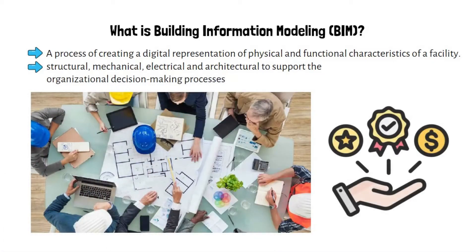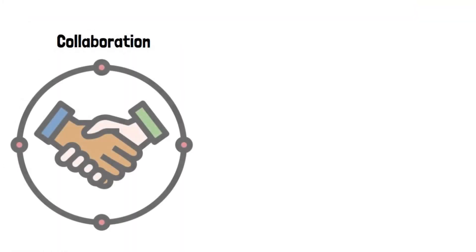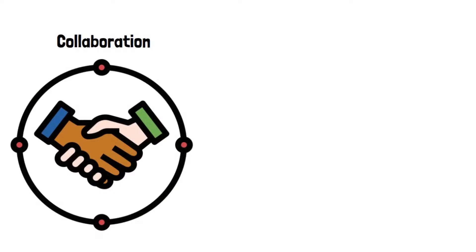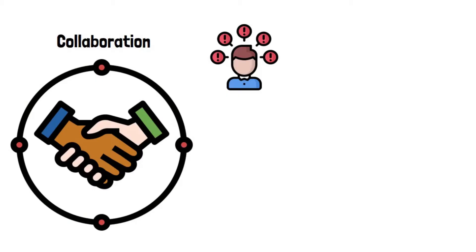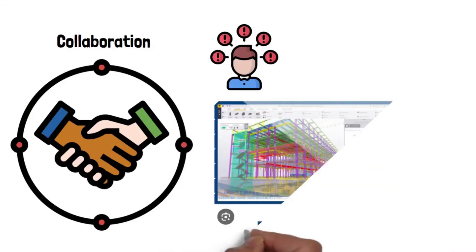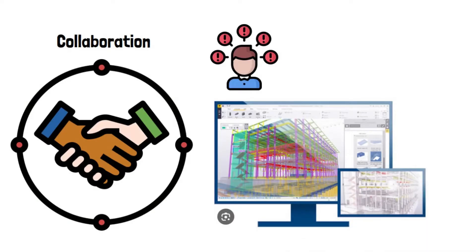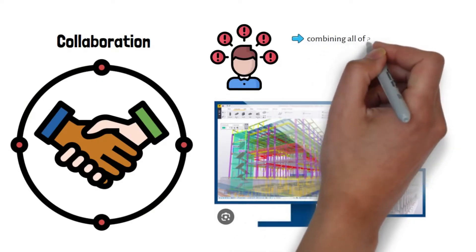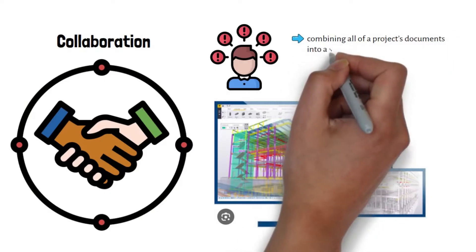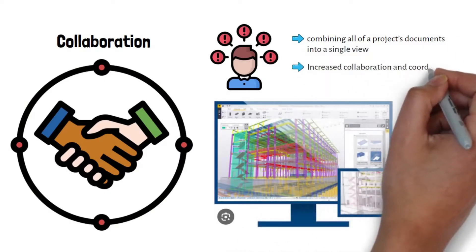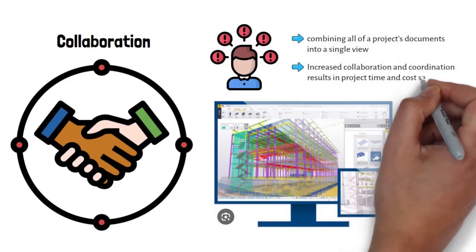Benefits of Building Information Modeling. Collaboration: Construction projects are short-term and multidisciplinary operations that face many problems due to lack of collaboration among project stakeholders. A single BIM model used for both analysis and documentation phases allows the owner, designer, contractor, and subcontractors to work on the same platform, which helps to address communication problems. BIM allows combining all of a project's documents into a single view, and increased collaboration and coordination results in project time and cost savings.